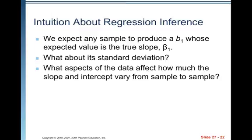Here's some intuition about regression inference. We expect any sample to produce a B1 whose expected value is the true slope beta 1. What about its standard deviation? What aspects of the data affect how much the slope and intercept vary from sample to sample?